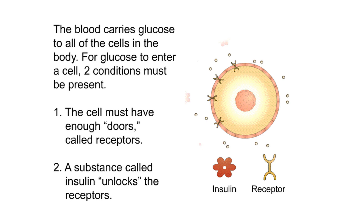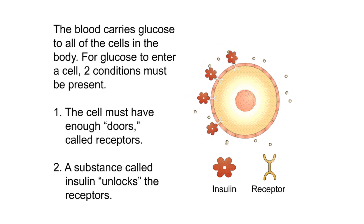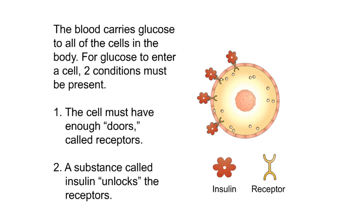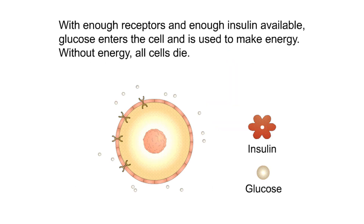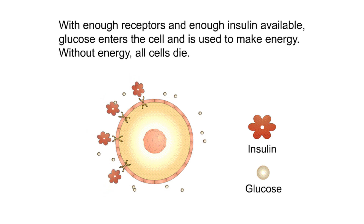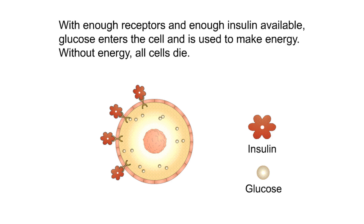For glucose to enter a cell, two conditions must be present: one, the cell must have enough doors called receptors; and two, a substance called insulin unlocks the receptors. With enough receptors and enough insulin available, glucose enters the cell and is used to make energy. Without energy, all cells die.